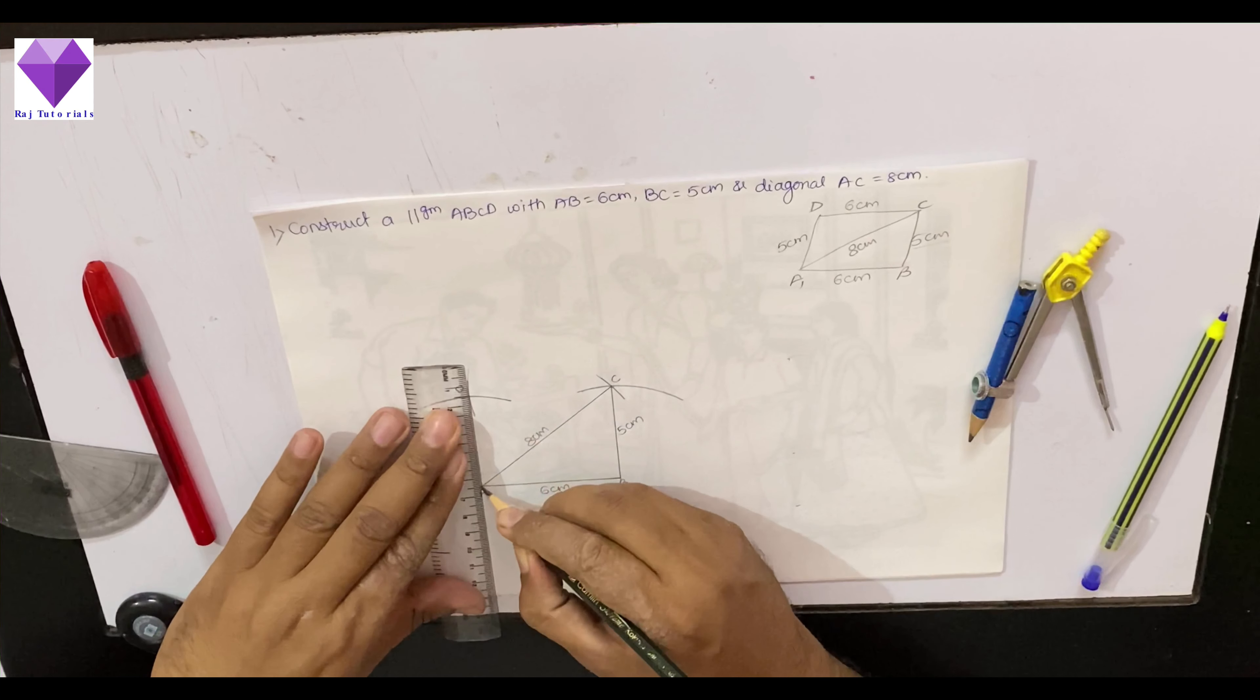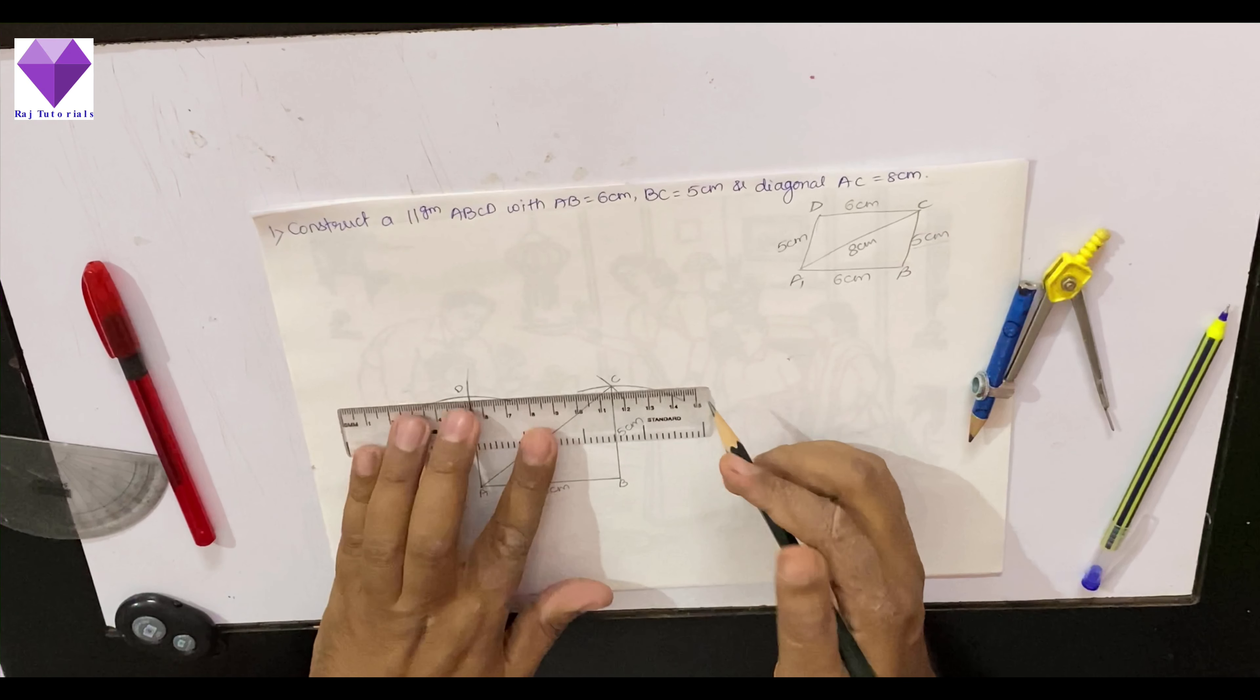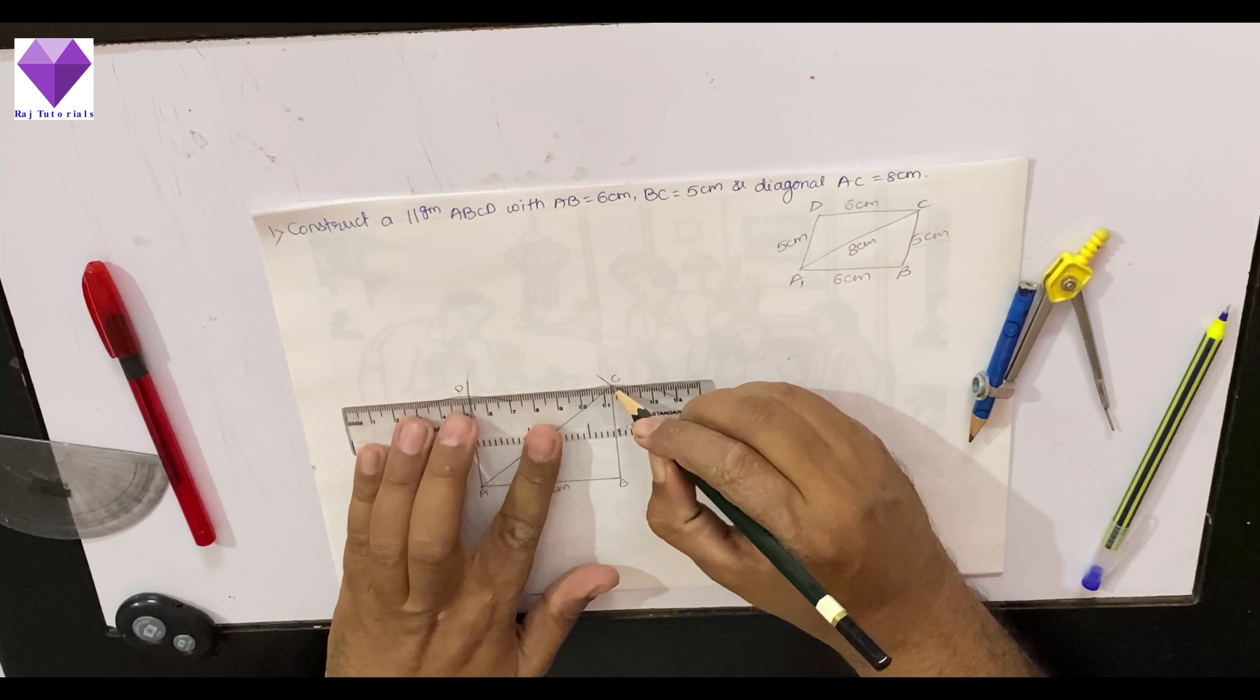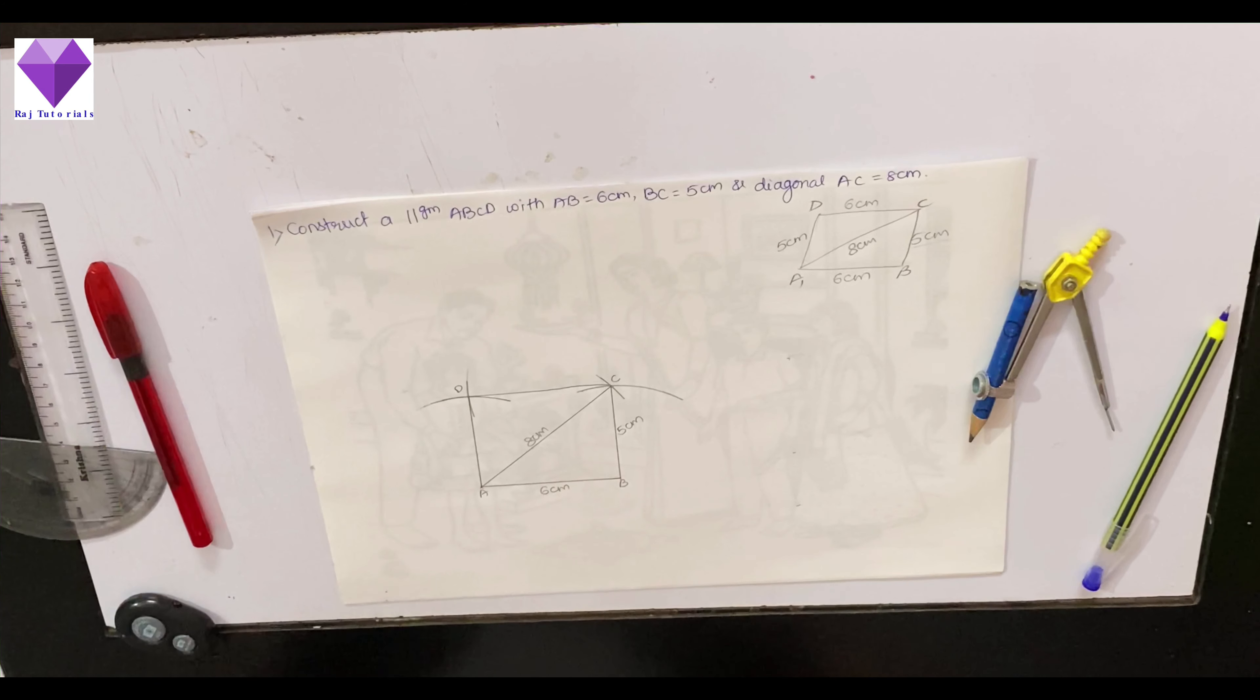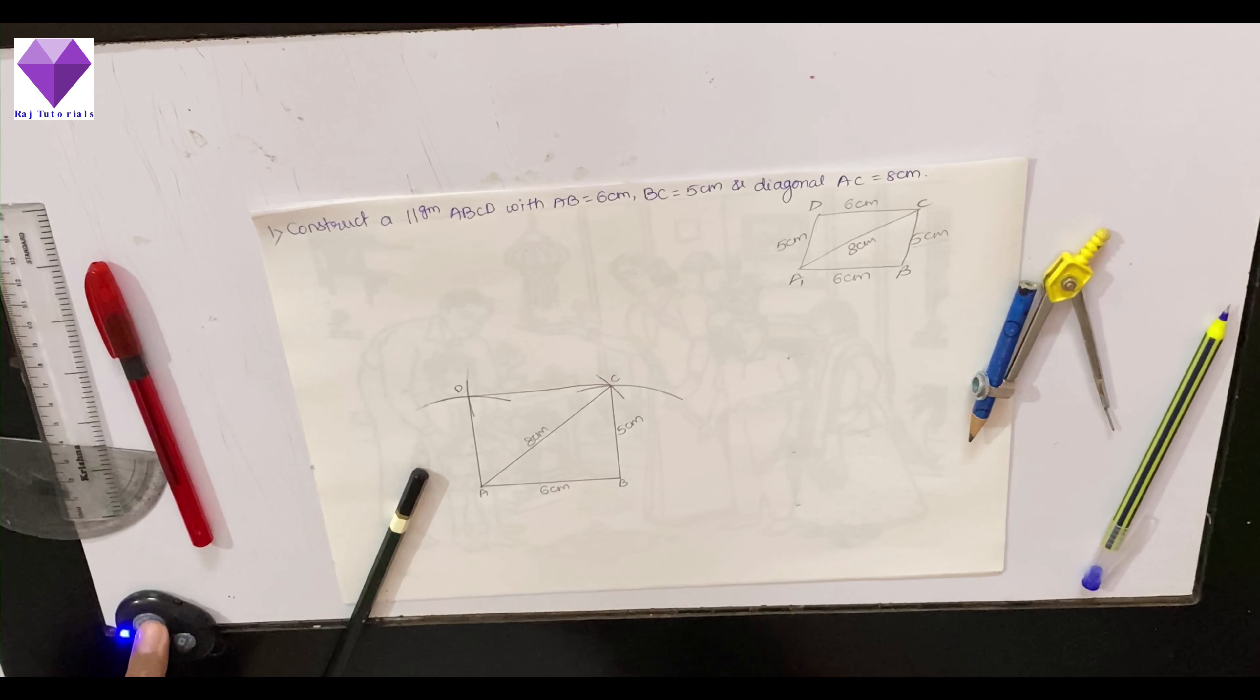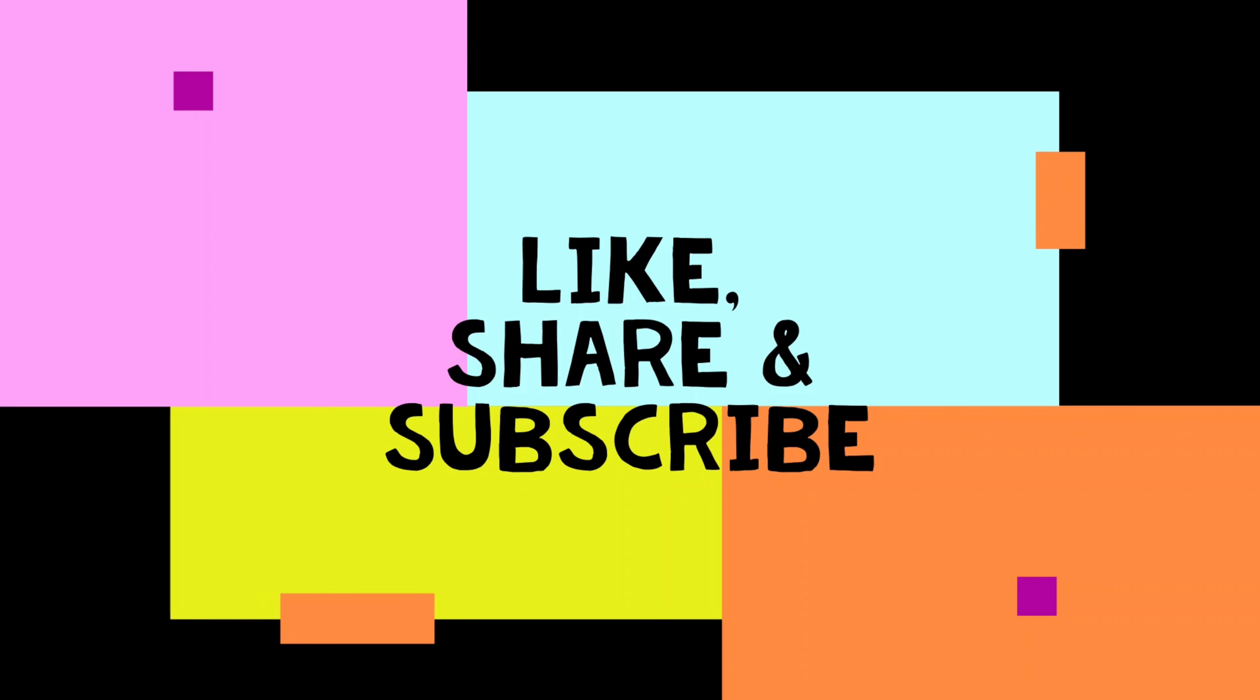Now I will join AD and CD. This is my parallelogram ABCD. Thank you.